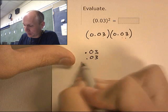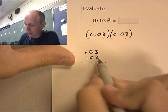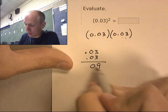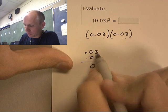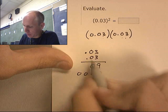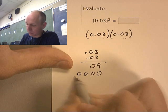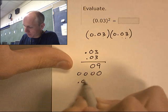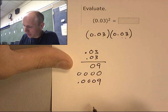Ready? Three times three is nine. Nine times zero is zero. Add a zero. Zero times zero is zero. I need one, two, three, four decimal places because I have four up here. Point zero, zero, zero, nine. There we go.